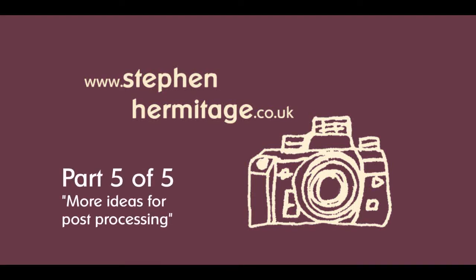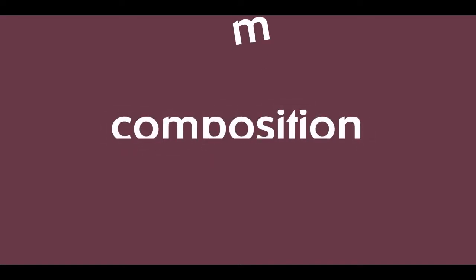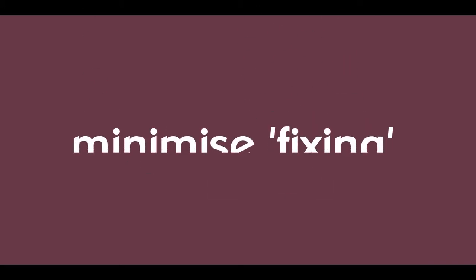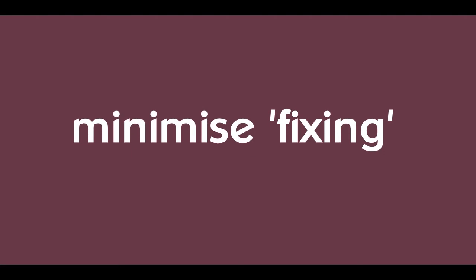In the previous video we saw how images can be significantly improved using Photoshop just by looking at the histogram and adjusting the levels, but also by cropping in and thinking about composition. When shooting my images I try very hard to get the image right in camera at the point of exposure and try to minimize the amount of fixing later on.